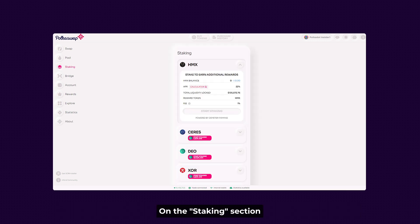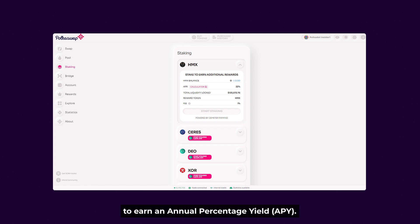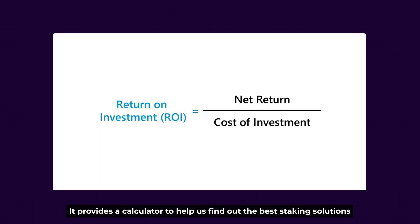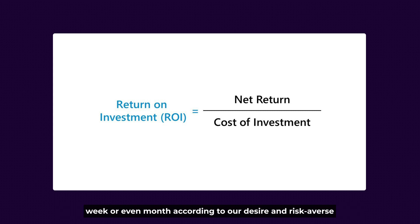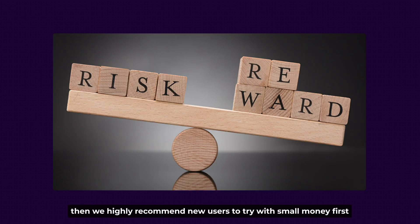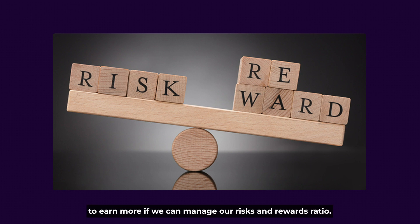On the Staking section, Polkadot Swap enables us to stake any supported token to earn an annual percentage yield. It provides a calculator to help us find the best staking solutions and return on investment ratio for each solution in terms of day, week, or month, according to our desired risk profile. Please note that at this stage, if we are not fully confident, we highly recommend new users to try with a small amount first to learn, and continue depositing to earn more once we understand our risk and rewards ratio.